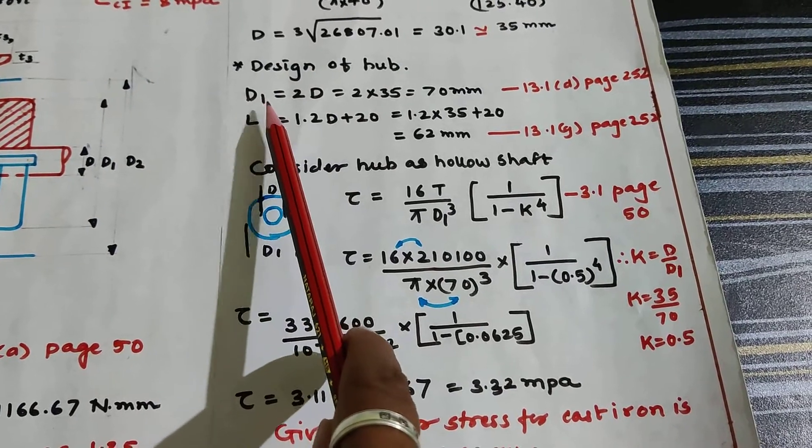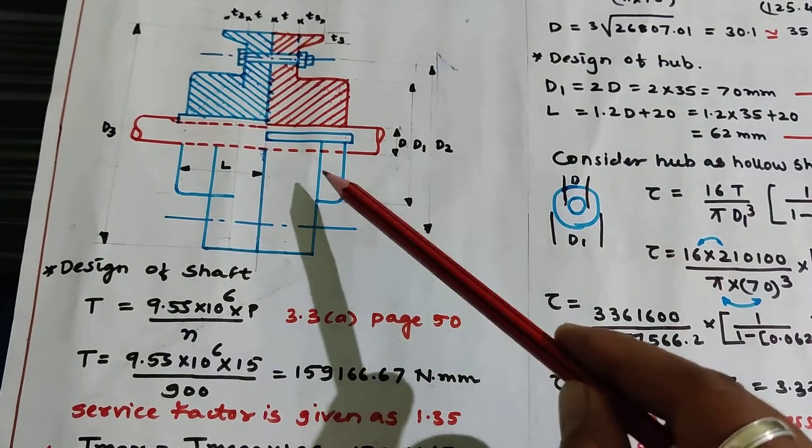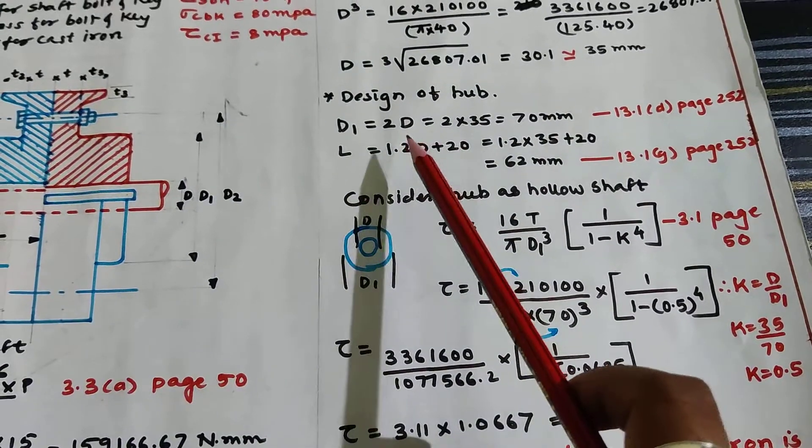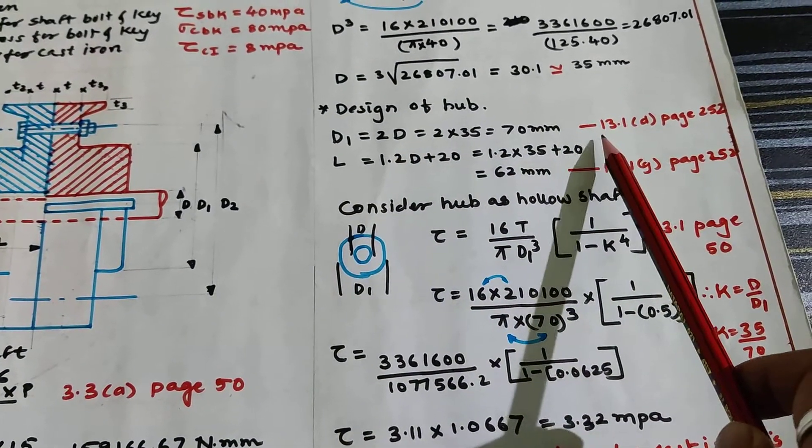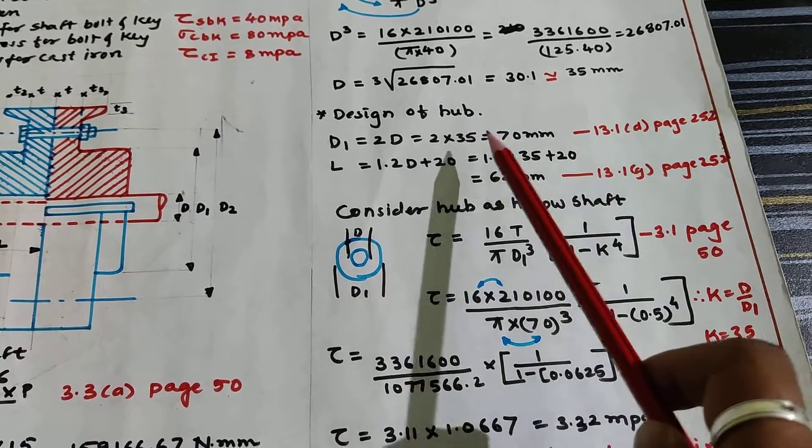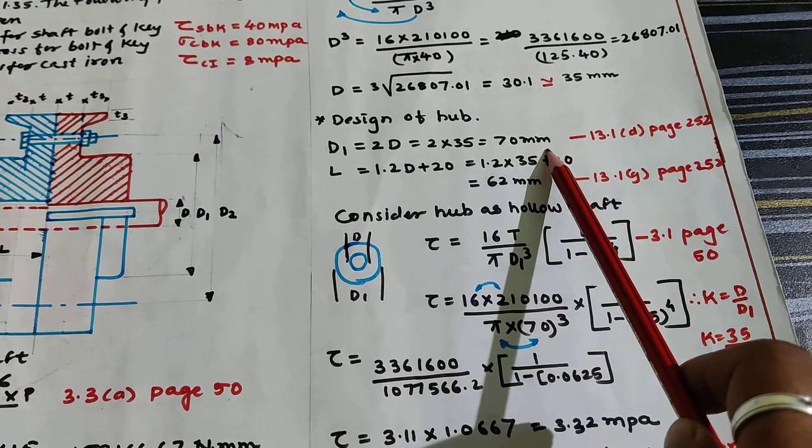Now we will go for design of hub. Diameter D1 is from hub this to this. The formula is on page number 252, equation 13.1D: D1 = 2D = 2 × 35, answer is 70 mm.